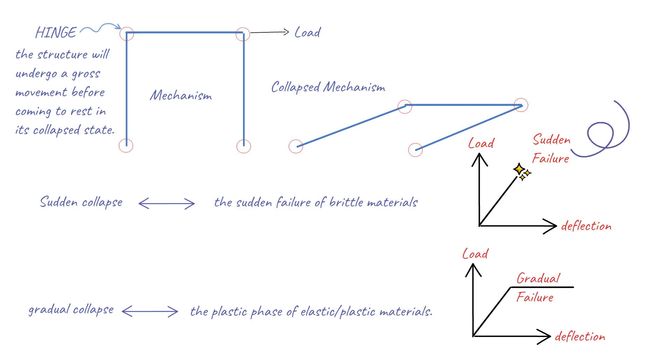Sudden collapse can occur for two reasons. First, the structural material is brittle. Second, the structure loses overall stability.